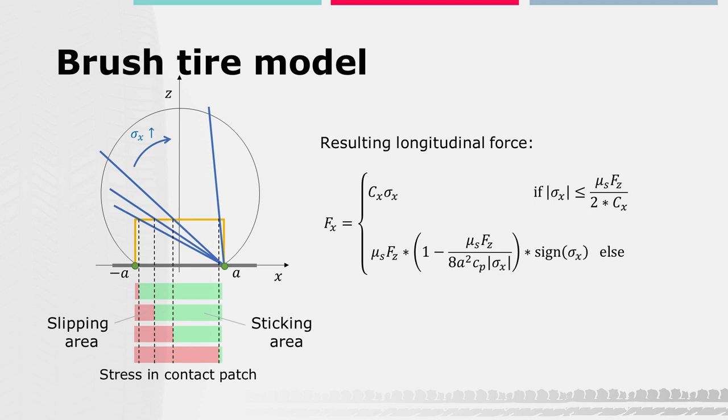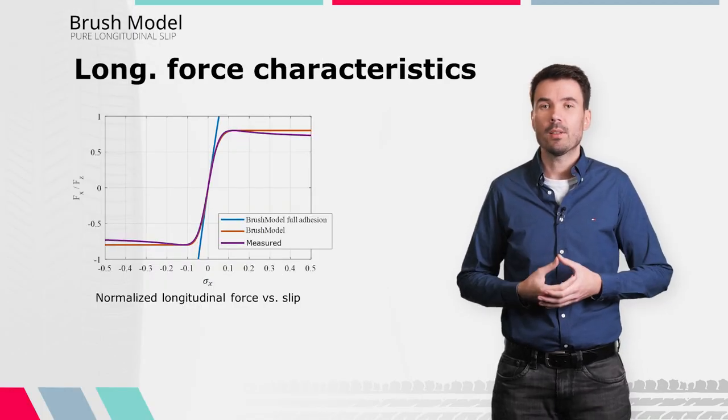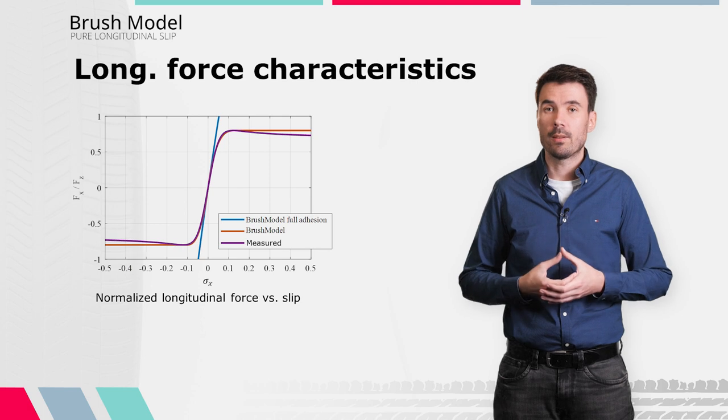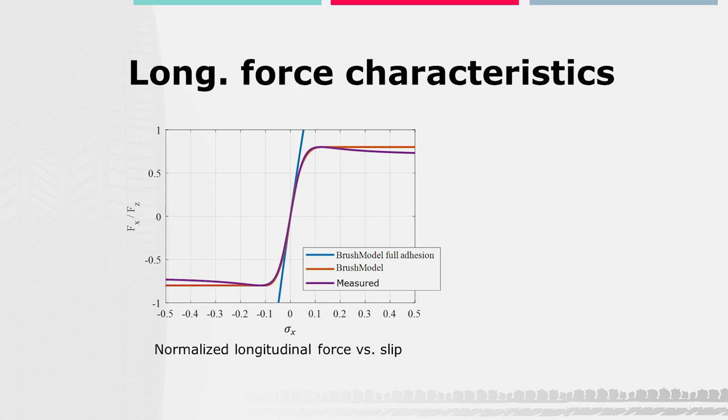To achieve this, the force value is calculated for different values of the longitudinal slip. Both positive and negative longitudinal forces can occur when a vehicle is accelerating or braking, which is considered by the signum function of the longitudinal slip. When considering only full adhesion, the longitudinal force has a linear dependency on slip, shown by the blue line. The red curve shows the modeled longitudinal tire force from the brush model that also considers sliding in the contact patch.